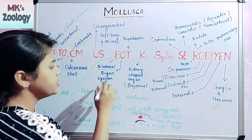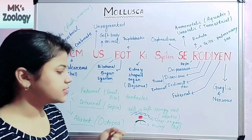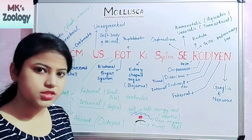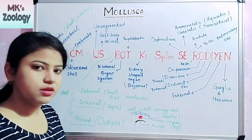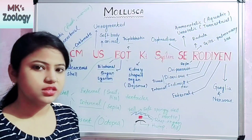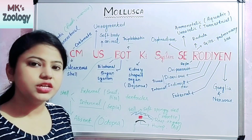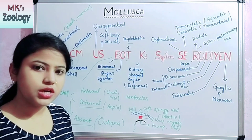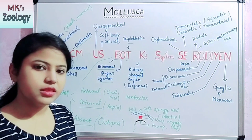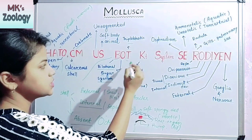O means organ system — all organ systems are present in the molluscan body, such as digestive system, circulatory system, and excretory system. The next is T, which stands for triploblastic, meaning three germ layers are present: ectoderm, mesoderm, and endoderm. That is why it is known as triploblastic.